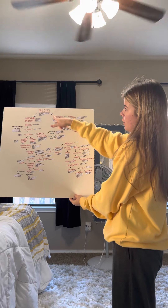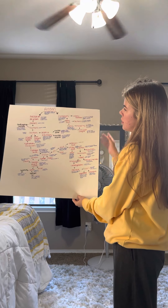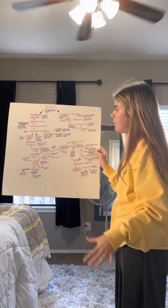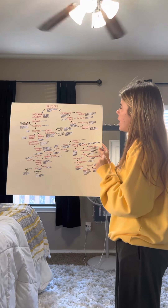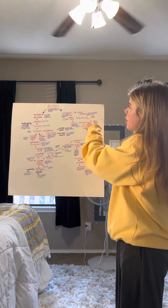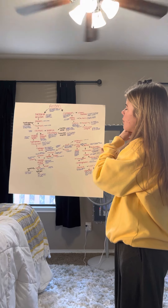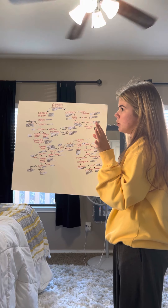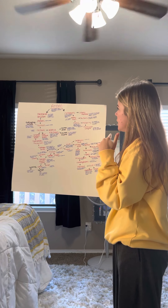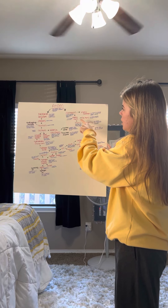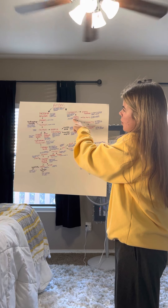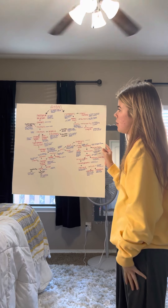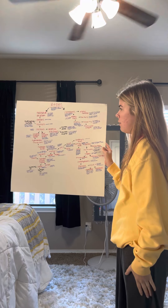Now moving to the right, we have elements, which are a pure substance that cannot be broken down any further. To the right, we have the atomic number, which is the number of a chemical element and the number of protons that increase in the nucleus. Going back, we have atomic mass, which is the mass average of an atom.